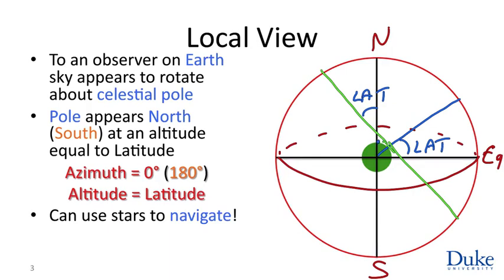Clearly, if you're at the pole, then your latitude is 90 and the pole is directly overhead. So you can use some understanding of the stars to figure out where you are and in what direction you're going. Stars are very useful for navigation.